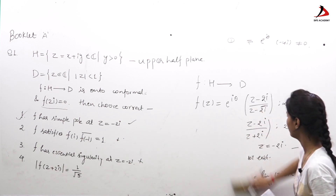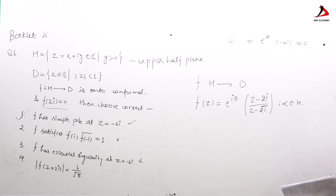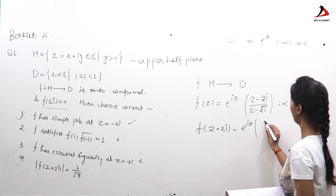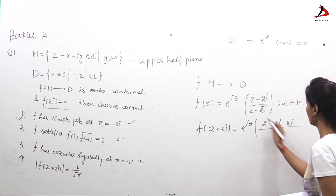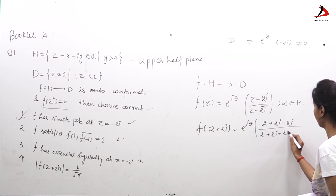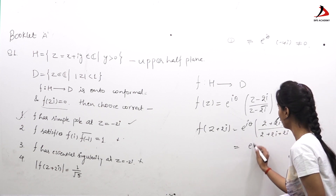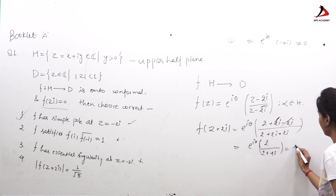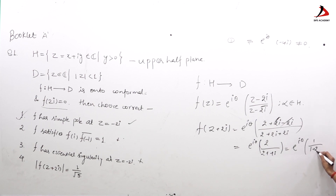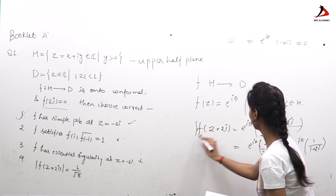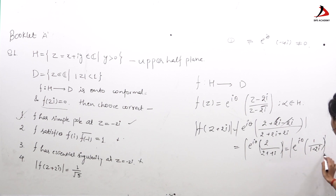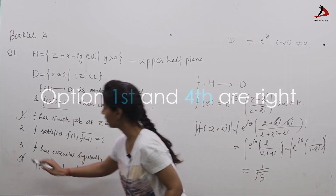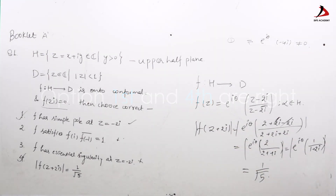For Option 4, we evaluate f(2 + 2i): e^(iθ)(2 + 2i − 2i)/(2 + 2i + 2i) = e^(iθ) · 2/(2 + 4i) = e^(iθ) · 1/(1 + 2i). Taking the modulus, |e^(iθ)| = 1 and |1/(1 + 2i)| = 1/√5. So |f(2 + 2i)| = 1/√5, and Option 4 is correct. Therefore, Options 1 and 4 are correct.